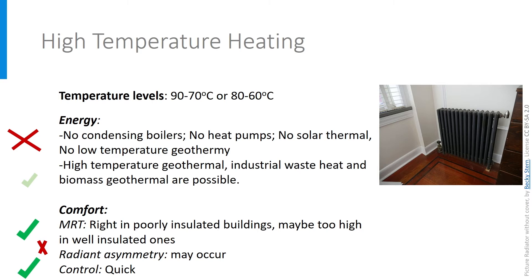There are, however, two interesting things about high temperature heating. The first one is comfort. In general, people love this high temperature source. And most importantly, in old, not well insulated buildings, it helps compensating for much too cold walls and windows during cold days. In short, it increases the mean radiant temperature MRT, especially if placed under cold windows. However, it may also increase radiant asymmetry, and in very well insulated buildings, it could cause a too high MRT. A second advantage is the quick control possibilities — if you come home and switch the heating on, it will deliver immediately a lot of heat and that feels good.